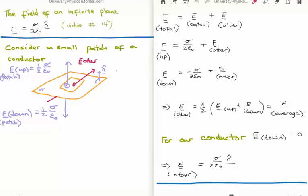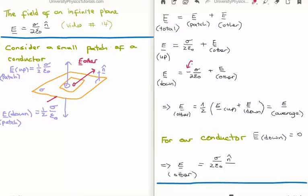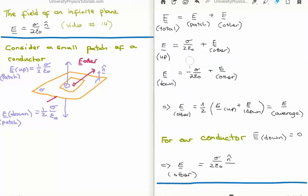The surface charge density is sigma. The total electric field is the field due to the patch plus the field due to other sources. The electric field above the patch is sigma over twice epsilon zero plus the other electric fields. The electric field below the conductor is minus sigma over twice epsilon zero plus the other electric fields — it's minus because we must incorporate n hat, with above positive and below negative. Adding the two equations, the total other field is one half of the field above plus the field below the conductor, which is the average field.